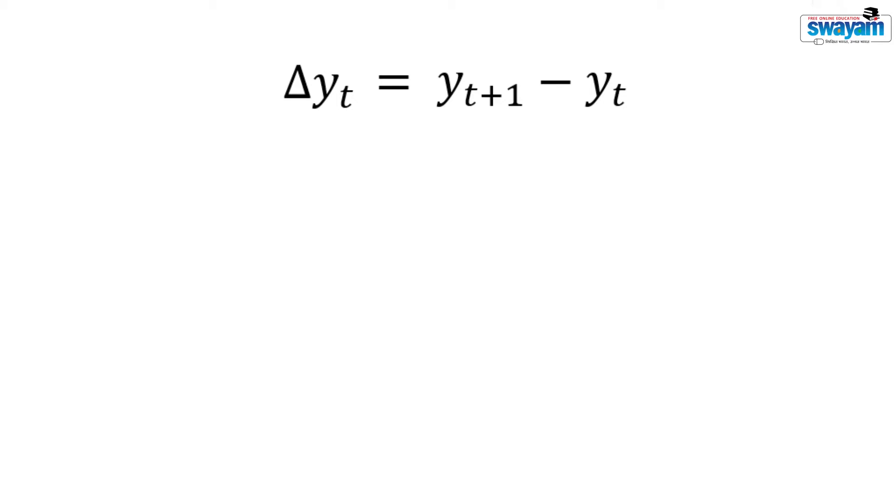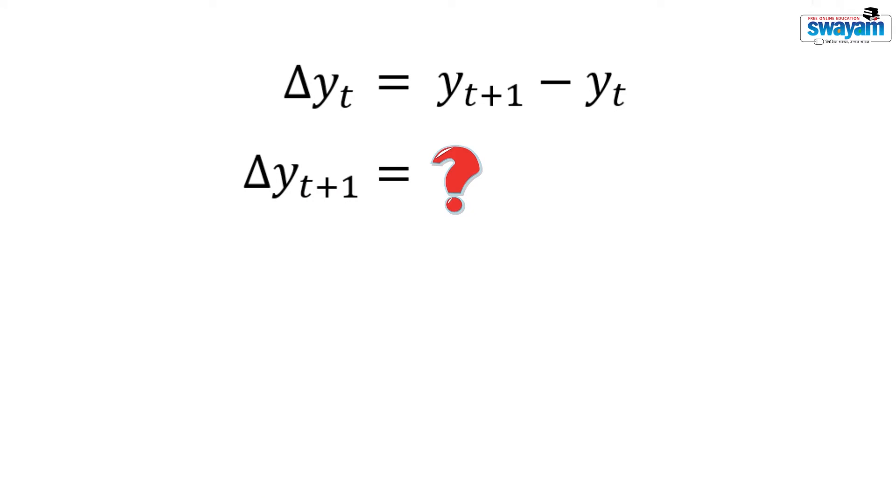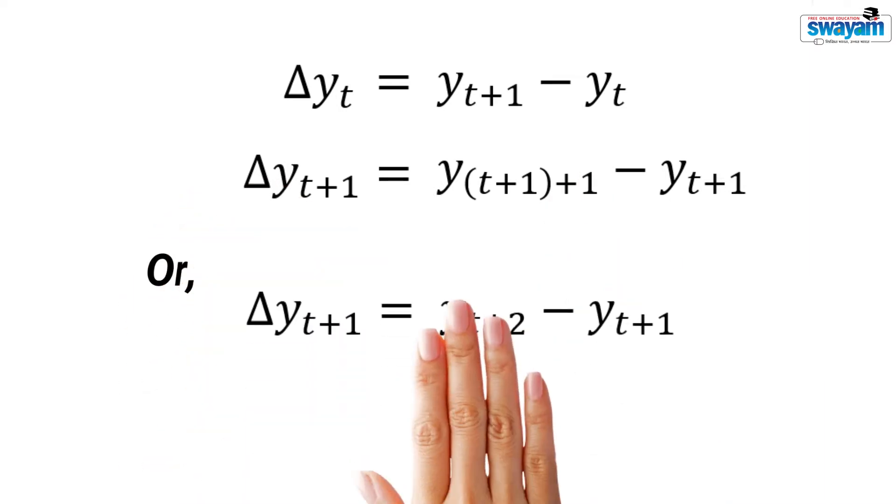Can you write the expression for the change of y in period t plus 1? Delta yt plus 1 can be written like this.